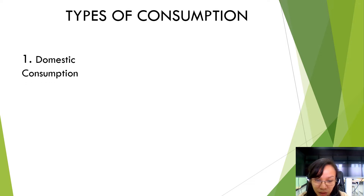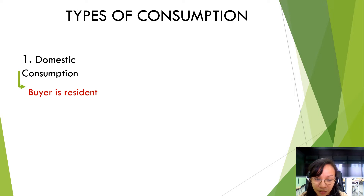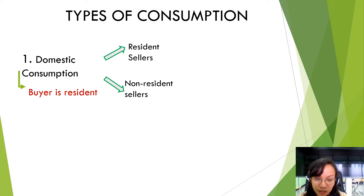Let's proceed to the different types of consumption. There are two types: domestic consumption and foreign consumption. Under domestic consumption, the buyer is a resident only — meaning the buyer is living within the Philippines — and can either purchase goods or services from a resident seller or from a non-resident seller. If the transaction is from resident seller to resident buyer, that's what we call sales or receipts. While the transaction from non-resident seller to resident buyer, that's what we call import.